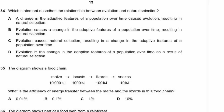Question 34: Which statement describes the relationship between evolution and natural selection? Natural selection causes evolution, not the other way around. Evolution is a change in the adaptive features of a population over time as a result of natural selection. The answer is D.